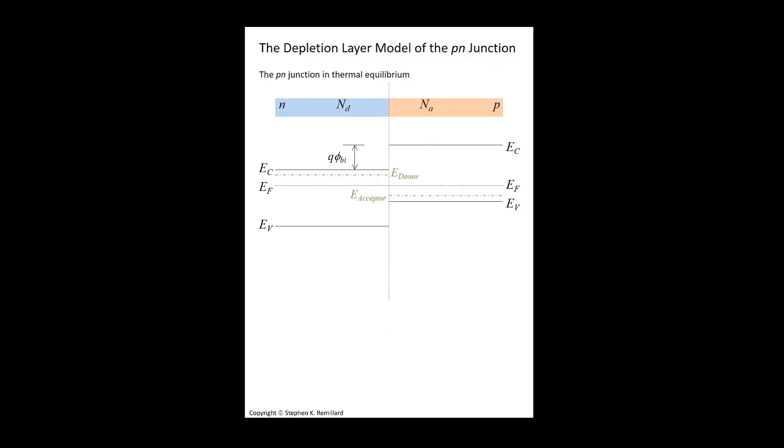But if we're in thermal equilibrium, so no current is passing through the semiconductor, then the Fermi energy is a single horizontal line. There's no quasi-Fermi energy right now because I'm not passing current through. The gap is preserved, so the conduction band edge and the valence band edge on both sides has the same separation, so the gap is not affected by doping.